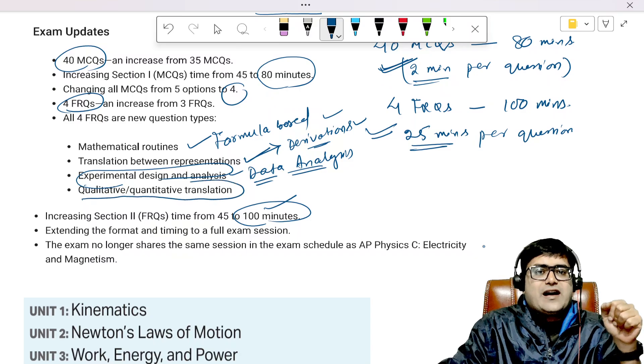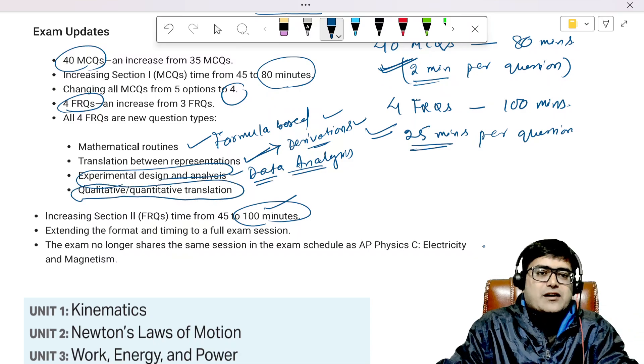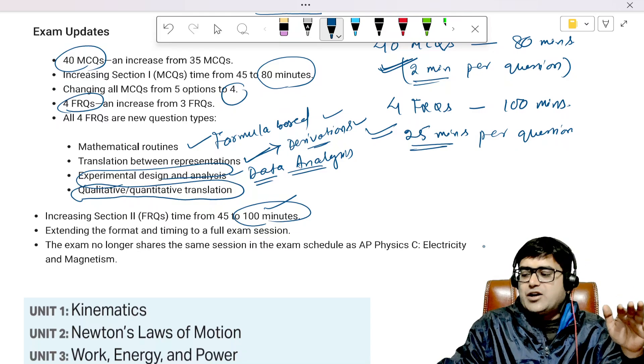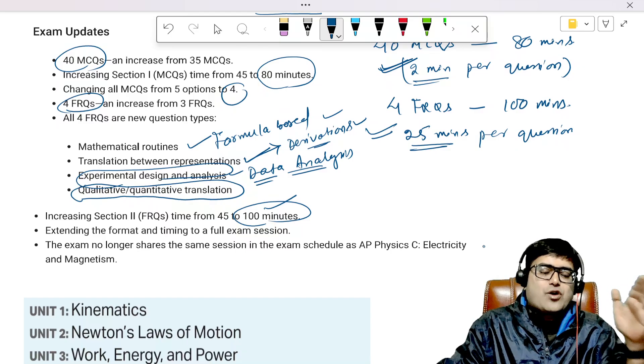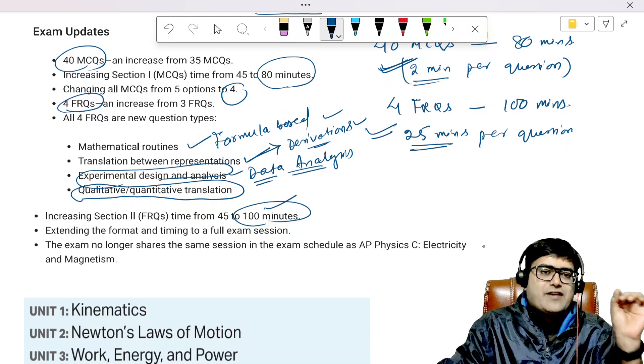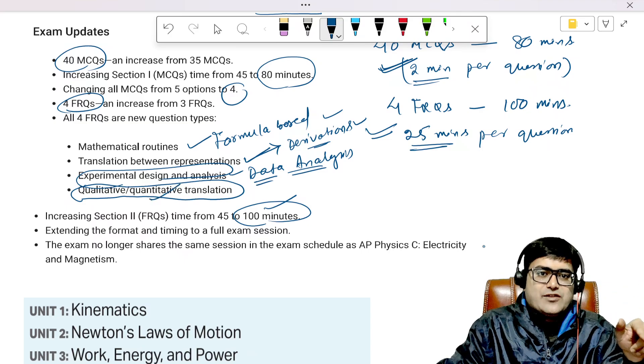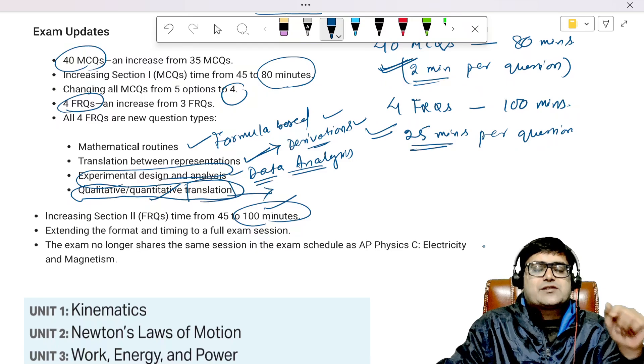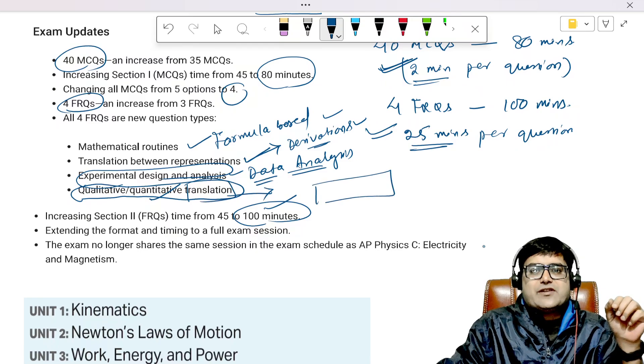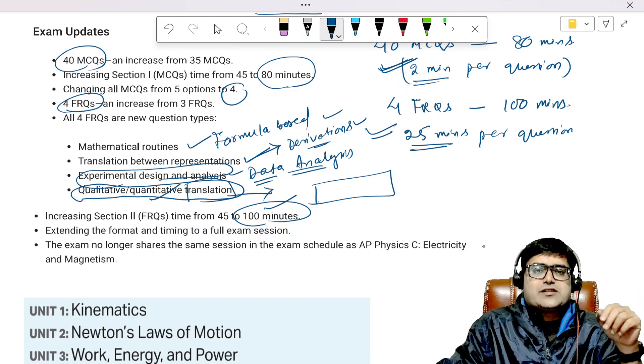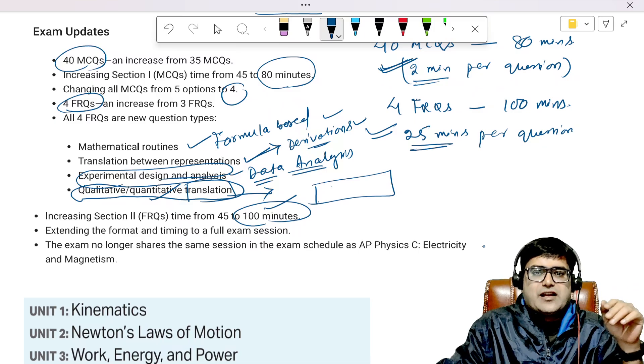There is qualitative and quantitative translation. What is this part? Qualitative means when you don't have to be precise on the values or numerical values. Quantitative is when you have to be precise on the numerical values. Translation essentially means you have a given set of, basically this is what I call quantitative derivation.